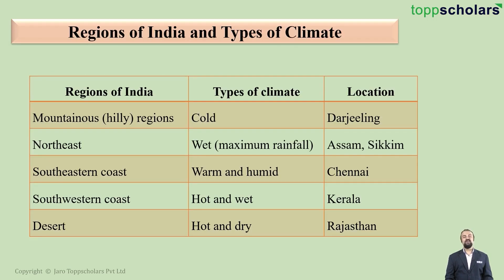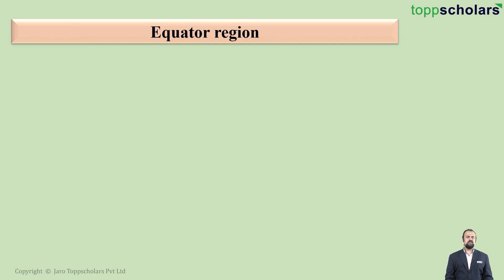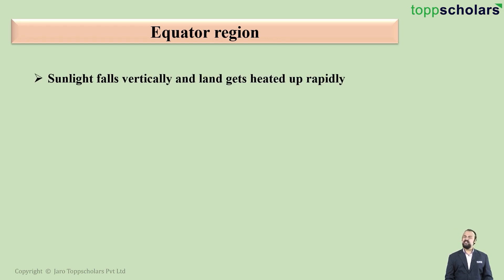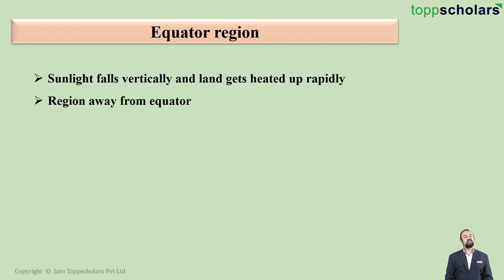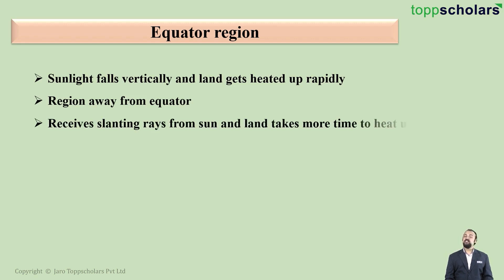Now let us talk about the equatorial region. Locations around the world which lie directly on the equator or near the equator are very hot. This is because in these regions sunlight falls vertically and the land gets heated up very rapidly. If the region is away from the equator, sunlight falls at a slanting angle and therefore the land takes much more time to heat up.